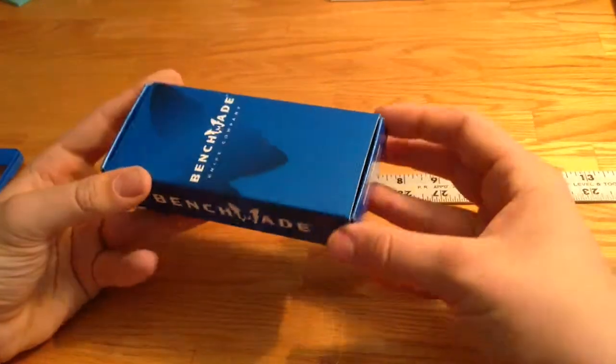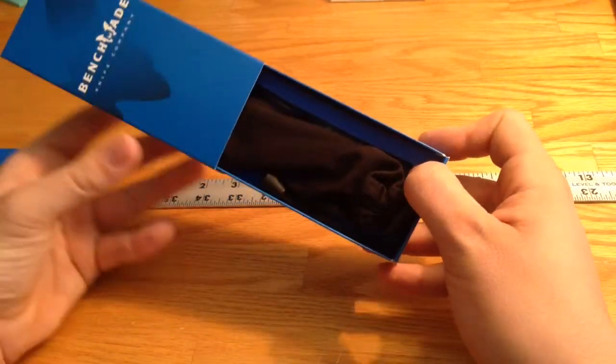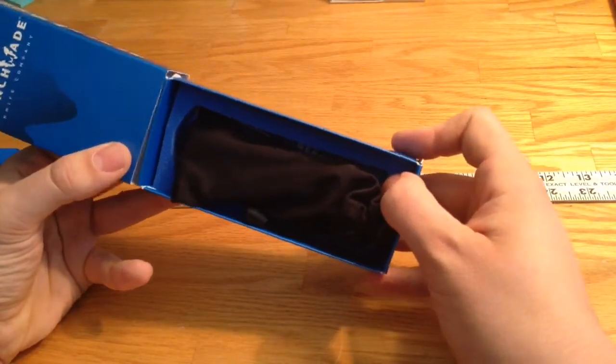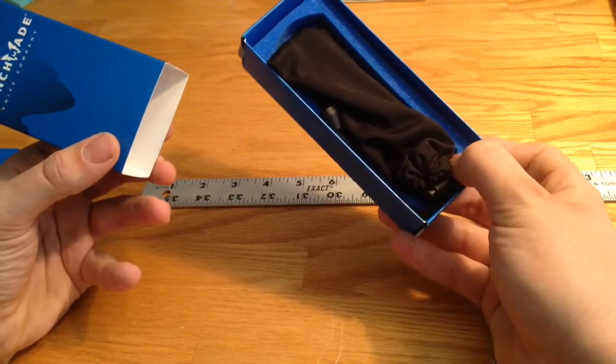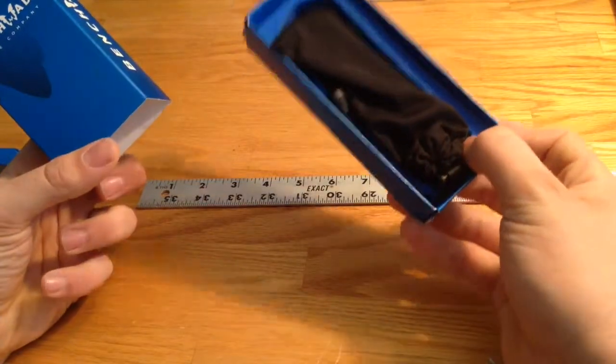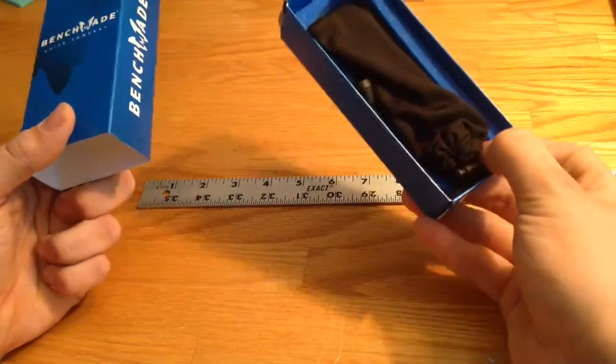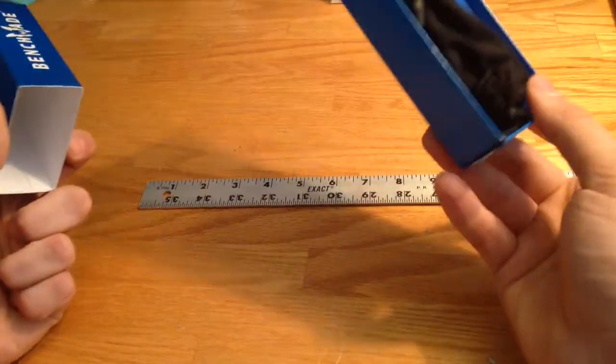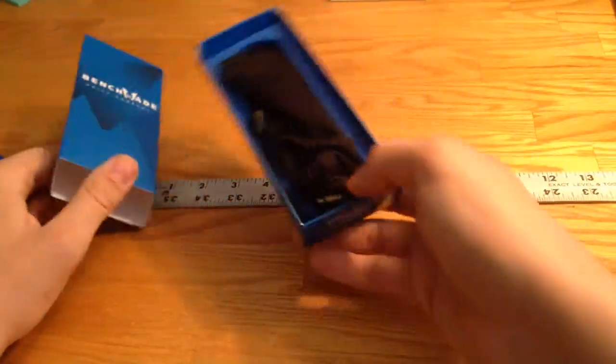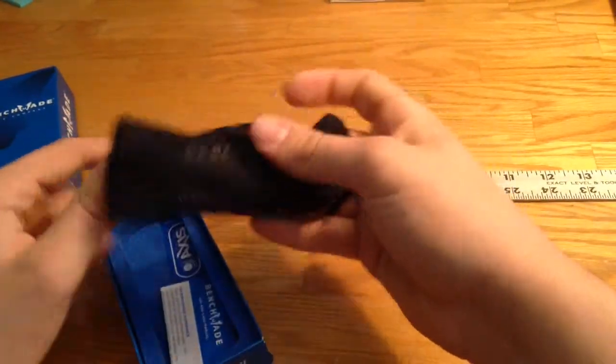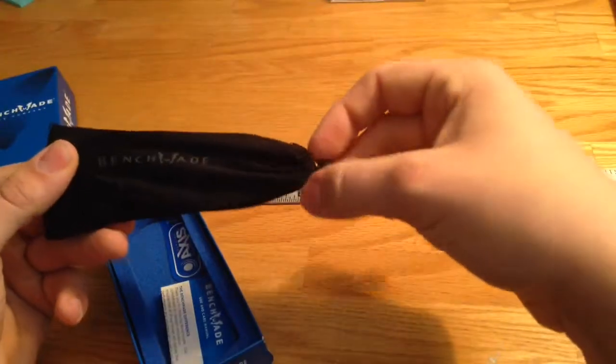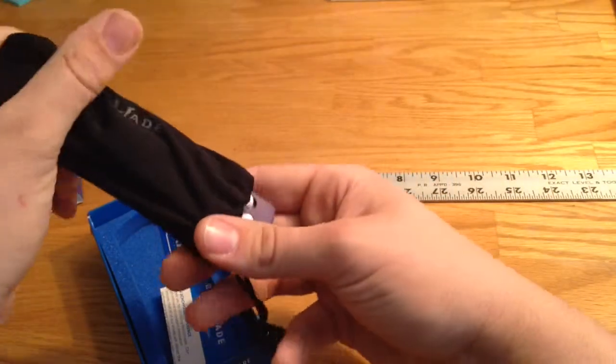Now this is Benchmade's blue class so when you open up the foam is blue. They have three different classes as of right now and those are a black class which is more of the tactical looking knives and then they have the gold class which is the high quality really cool thousand dollar knives which I will never be able to afford. But they are there in case you guys want them. So this is a blue class knife. The Benchmade 551 Griptilian comes in a little baggy, really nice microfiber cloth bag which actually cleans the blade quite nice.